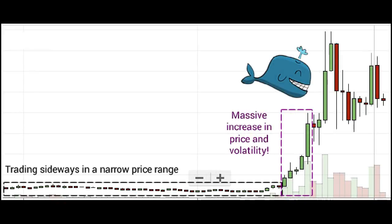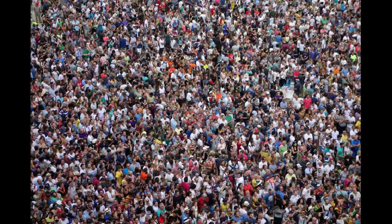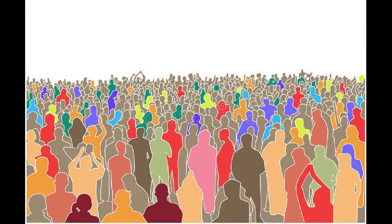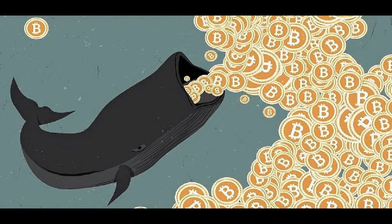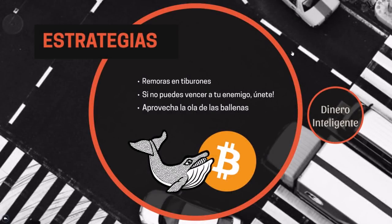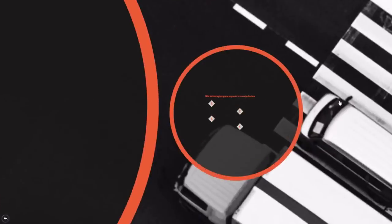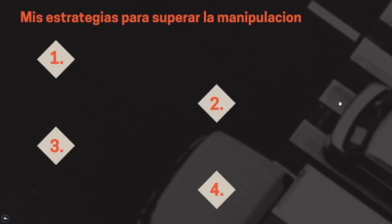La forma más efectiva de hacer dinero en estos momentos es apartarte de lo que la mayoría de los inversionistas minoritarios están haciendo y empezar a pensar y actuar como una ballena, aunque no tengas ese mismo capital. En vez de quejarte de la manipulación injusta de las ballenas —con lo que en realidad no vas a cambiar nada— debes dejar de pertenecer al segmento del dinero tonto y comenzar a ingresar al segmento del dinero inteligente donde están las ballenas.